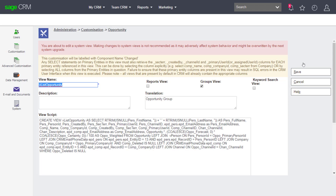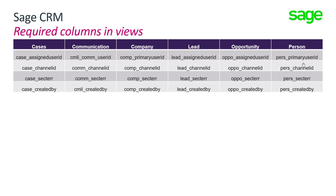Please note that message at the top of the screen explaining that certain columns have to be included — this is very worthwhile remembering. When you are creating a new view, you have to be aware that there are required columns. This is because the entities mentioned inside the view are governed by security. For each entity governed by security, you must ensure that the columns referenced within the different security policies are included, so that the SQL generated automatically by SageCRM will actually make sense. CRM will reference those columns, so you have to include them.